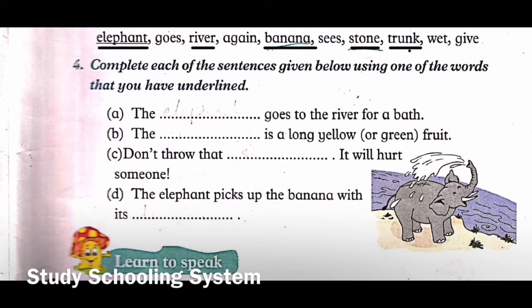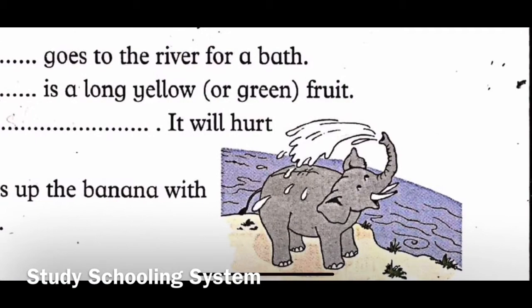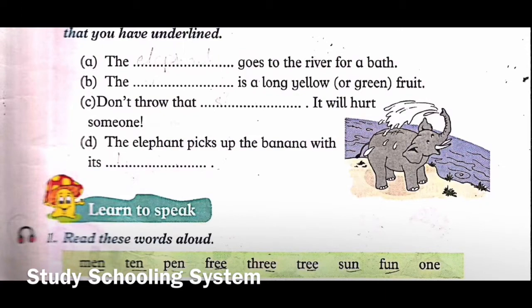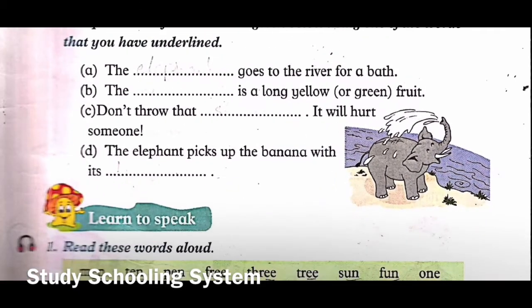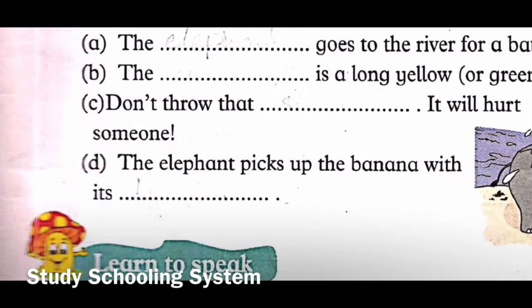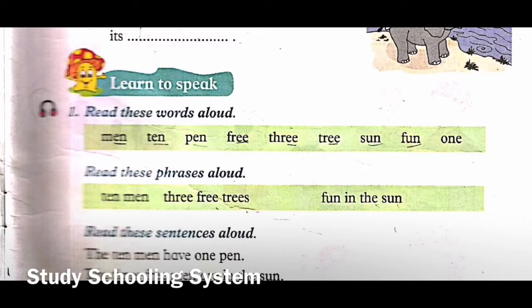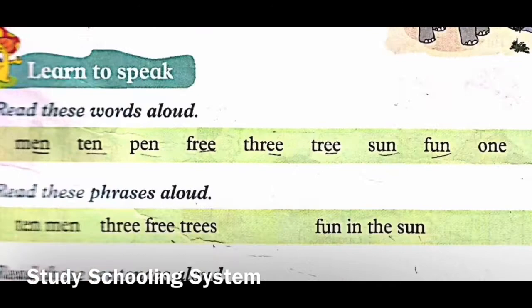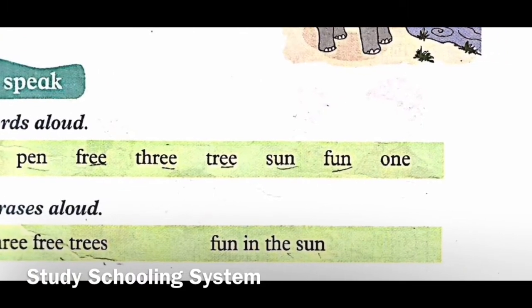Part D: 'the elephant picks up the banana with its dash' - yes, trunk. You know that part of an elephant is called a trunk - they pick up a banana with it, they use it to pick up water and shower. So part D the answer is trunk. Good job! Now we have 'Learn to Speak' - read these words out loud. Let's read together - I will read and you read after me.